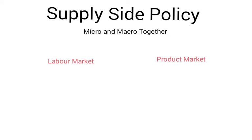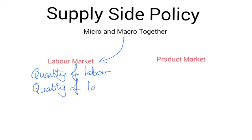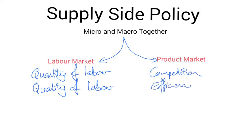There are two main ways that we think about supply-side policy. The first one influences the labour market — generally either to improve the quantity of labour, which means increasing the amount of workers in the workforce, or the quality of labour, which is improving their skills and ultimately their productivity. The other main element is supply-side policies which target the product market, where we're essentially talking about the role of competition and efficiency, and especially dynamic efficiency, which we've looked at in our micro studies.